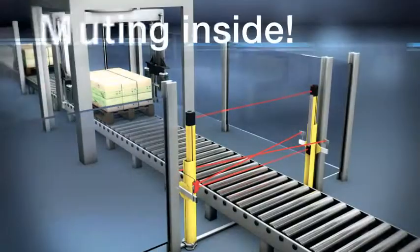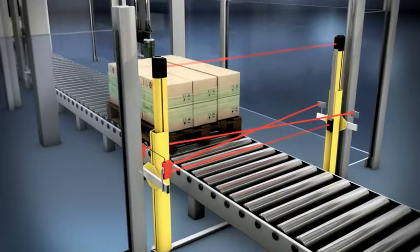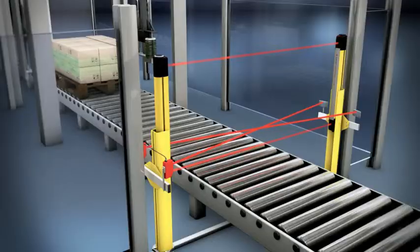The selection of partial muting isn't a problem either for the Leutze electronic sensor. Lower beams are muted, the upper beam remains active, removing the need for further safeguarding.